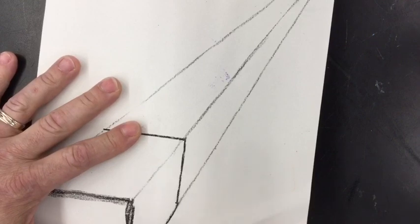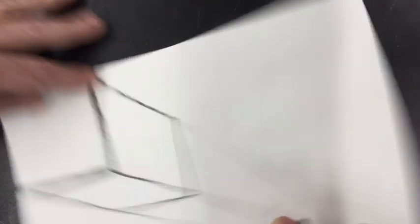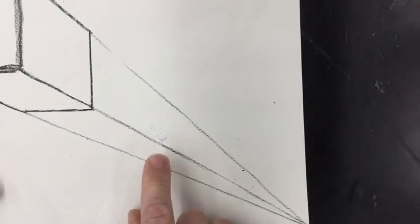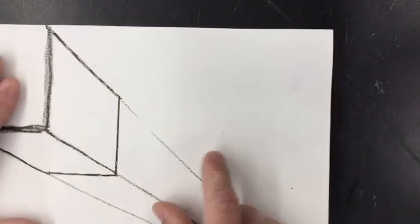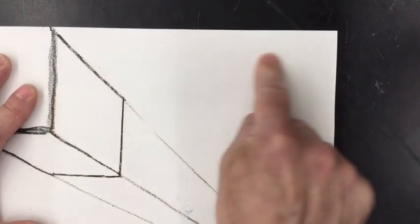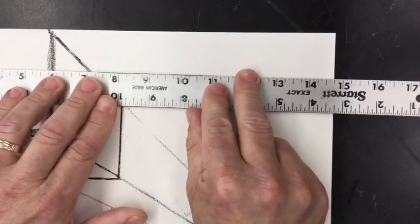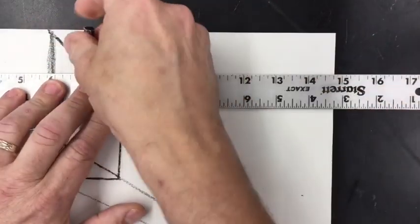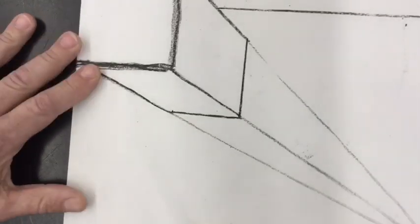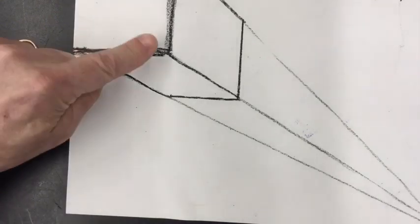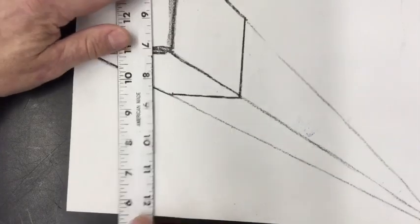I'm gonna darken these lines here. Now at this point, if you were using pencil, you could erase this stuff right here—you don't need it anymore. Now I'm gonna put in two more lines. One is gonna be parallel with the top of my paper touching the cube I just made, and one's gonna be over here parallel with this edge of the paper touching the cube.